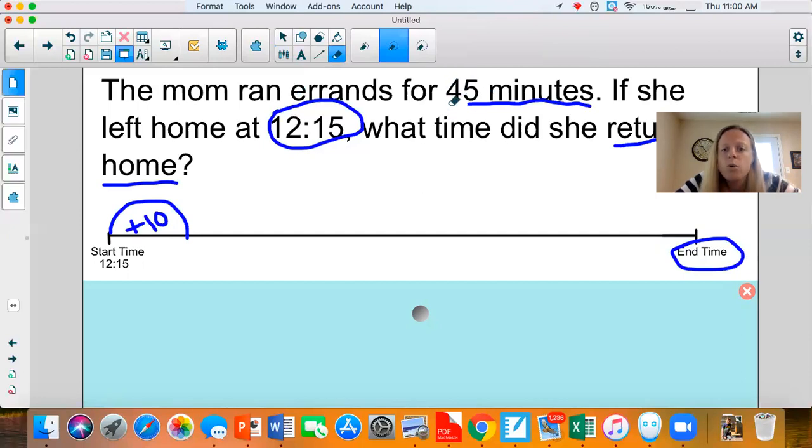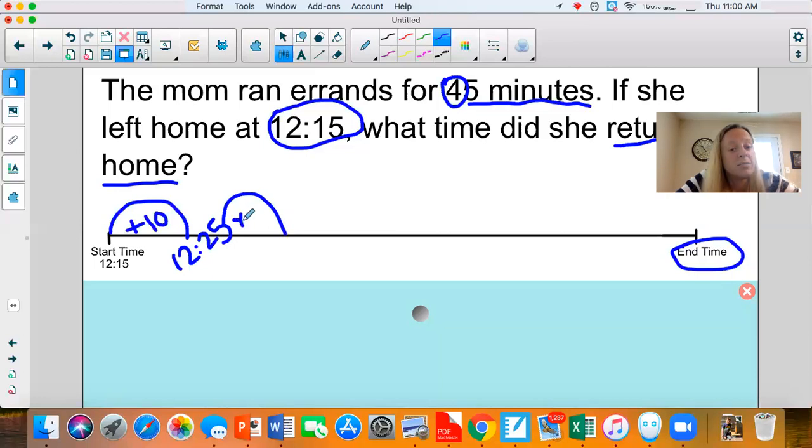There are four 10s in 45. So we need to do four 10-minute hops if we're doing 10-minute hops. So we've got one 10-minute hop. 12:15 plus 10 is 12:25. Then if we do 12:25 plus 10, because we said we needed four 10-minute hops, that's going to be 12:35.